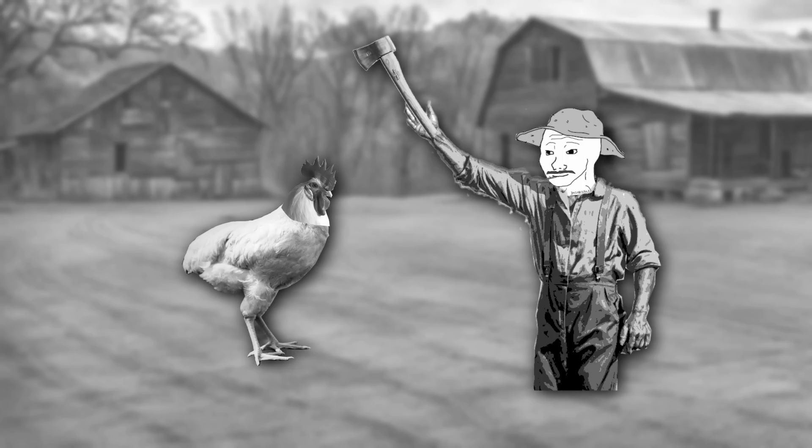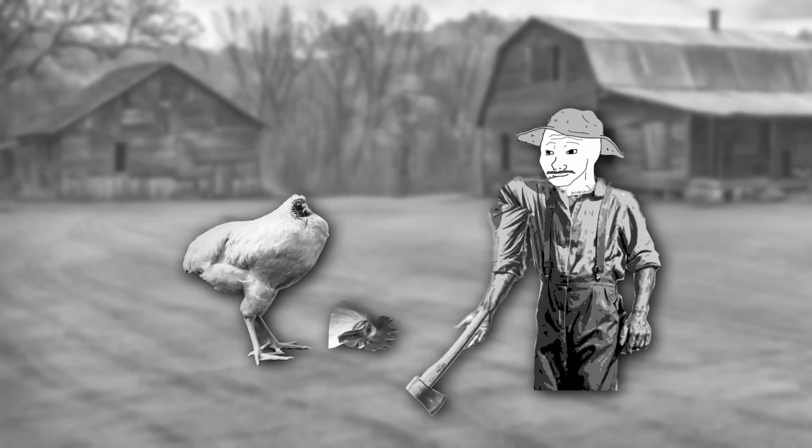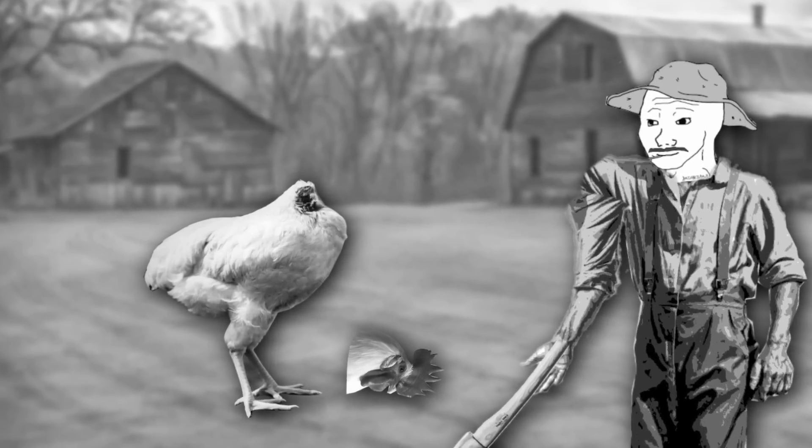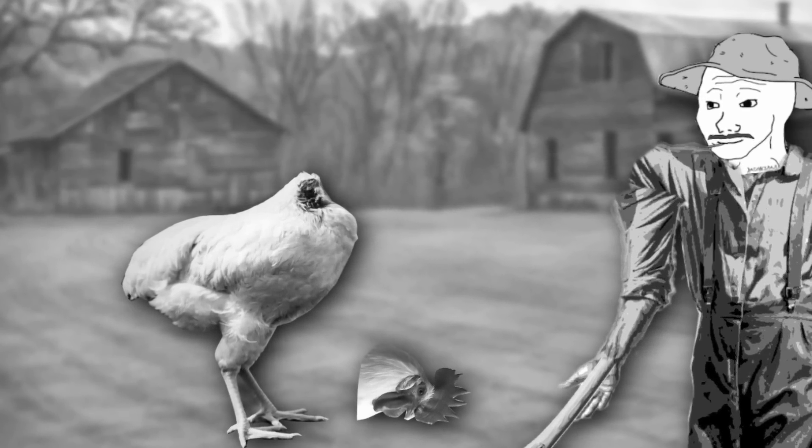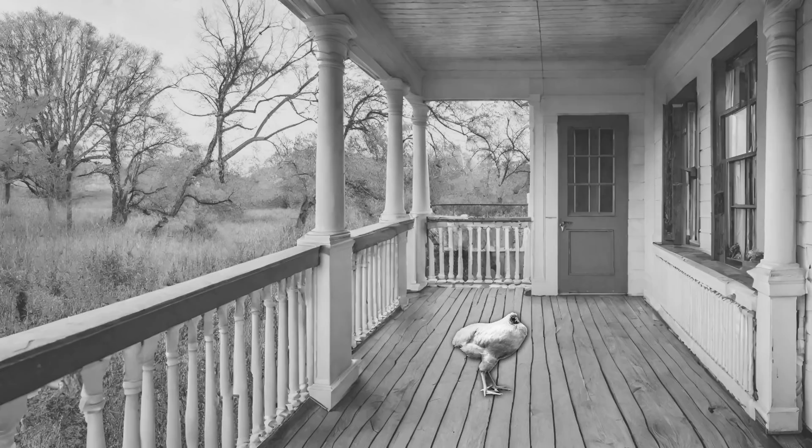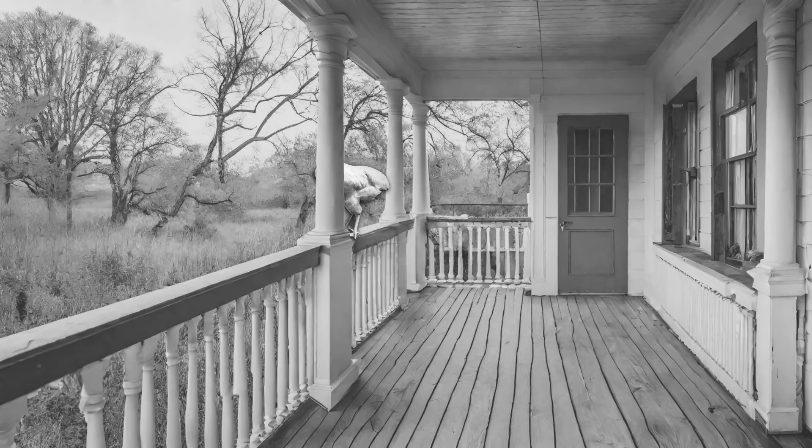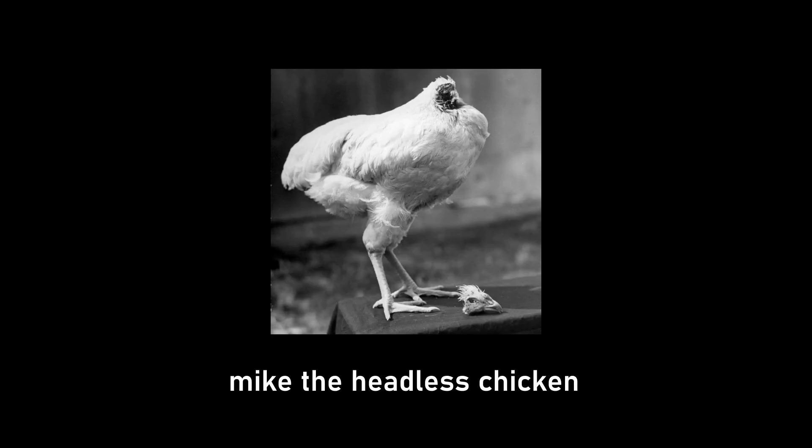On September 10th of 1945, a farmer in Colorado, United States, cut off the head of a chicken named Mike, but accidentally only removed most of its head while leaving its brainstem intact. Due to a blood clot, the chicken didn't bleed to death, but was able to live for 18 more months while performing many chicken-like actions, such as walking around clumsily, balancing on a perch, crowing, and pecking for food. It was named Mike the Headless Chicken.